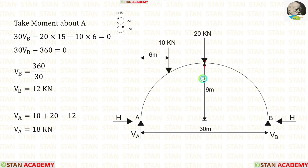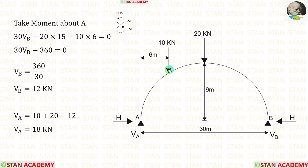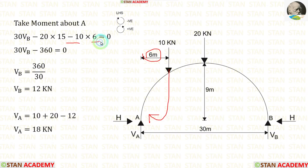The point load of 20 kilo Newton is acting towards point A in the anticlockwise direction, so it will be negative and the distance is 15 meters — giving minus 20 × 15. The point load of 10 kilo Newton is acting in the clockwise direction, so it is also negative and the distance is 6 meters. Finally, we are getting VB equal to 12 kilo Newton.